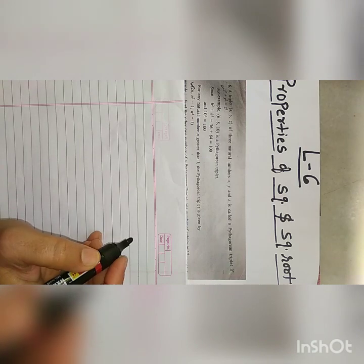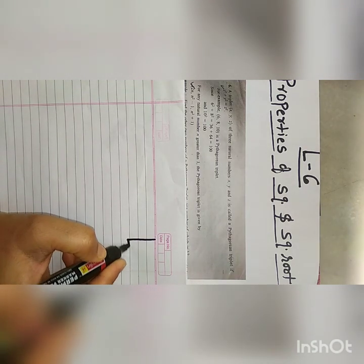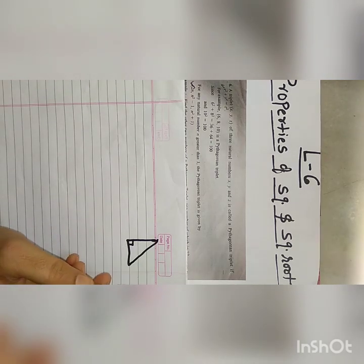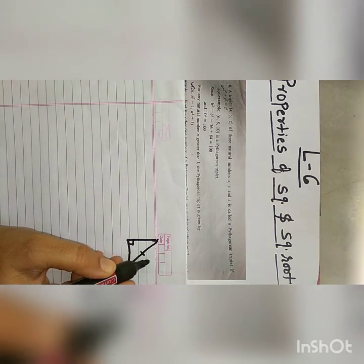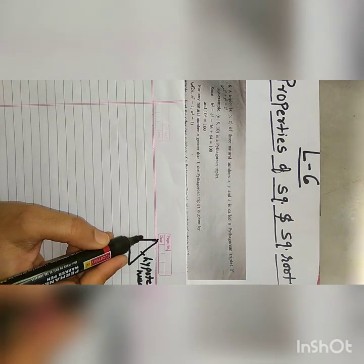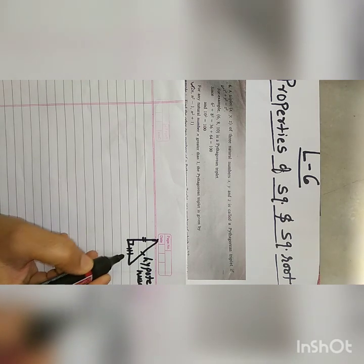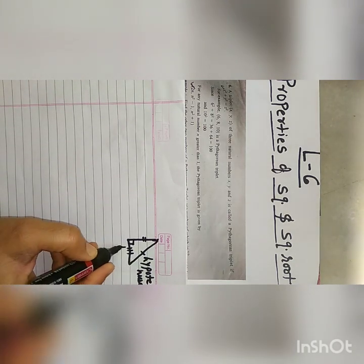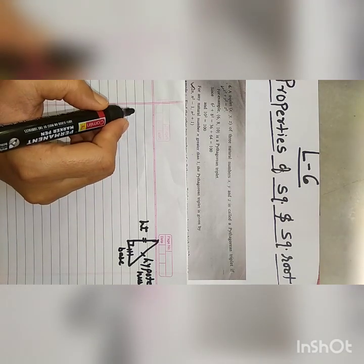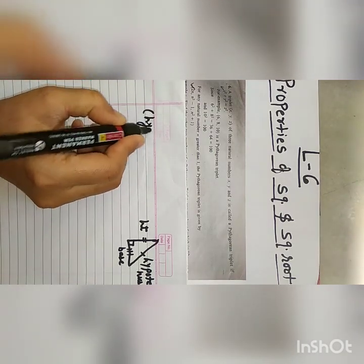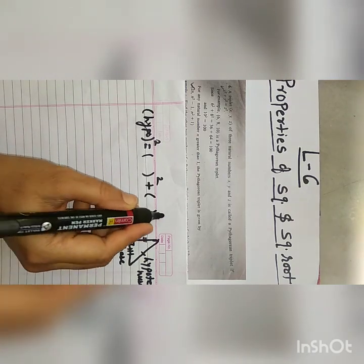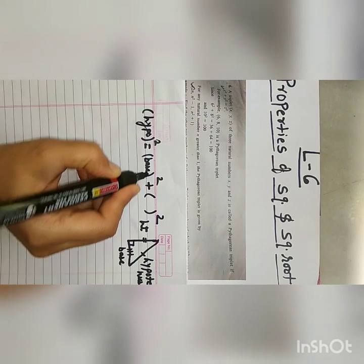In your 7th standard you have learned about the triangle and its properties. In that chapter you have learned about the right angle triangle — a triangle whose one angle is 90 degrees. The side opposite to 90 degrees is called the hypotenuse, which is the longest side of the triangle. The remaining 2 sides are the 2 legs of your triangle — one is called the base and the other is called the height. So, we have seen Pythagoras theorem: the square of the hypotenuse is equal to the sum of the squares of the other two legs, that is base and height.